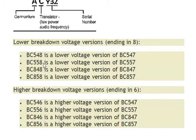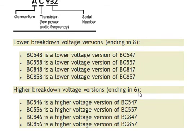Some transistors are used for lower breakdown voltage versions, ending with 8, and some are used for higher breakdown voltage versions, ending with 6. BC548 is a lower voltage version of BC547. BC558 is a lower voltage version of BC557. BC848 is a lower voltage version of BC847. Higher breakdown voltage versions ending with 6: BC546 is a higher voltage version of BC547, BC556 is a higher voltage version of BC557, and BC846 is a higher voltage version of BC847.